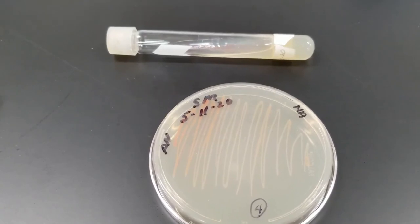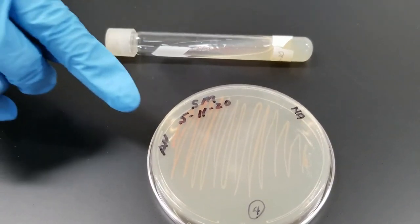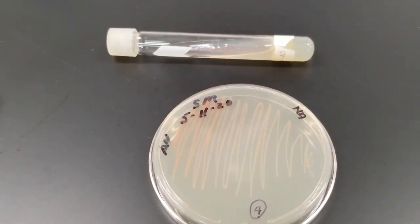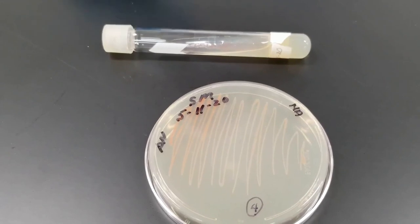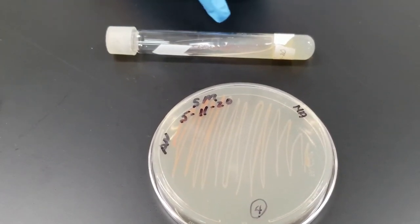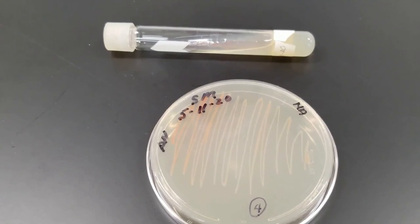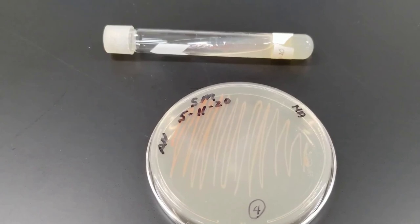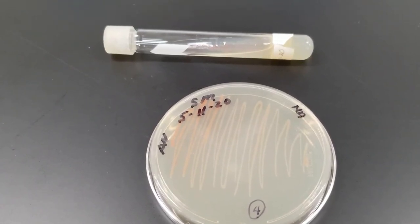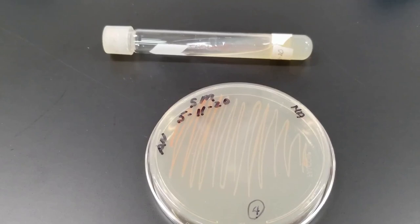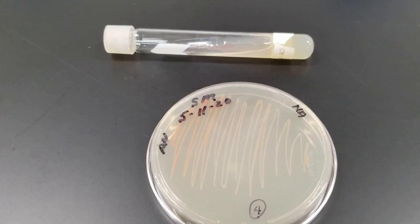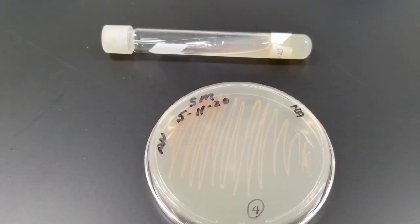But you can see on the plate the streak where we went with our loop. We have growth wherever the loop had touched. And also then on the slant. A lot of growth down at the bottom and then extends up along the slant towards the top. Oftentimes you will look at the different characteristics. Nice heavy growth there. Notice the color. One of the big things you will want to notice is the pigmentation. Whenever you have a bacterial culture you are working with that can give you clues as to the identification of it.